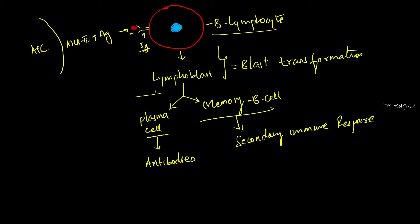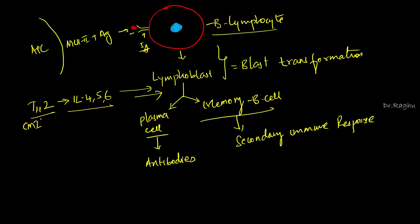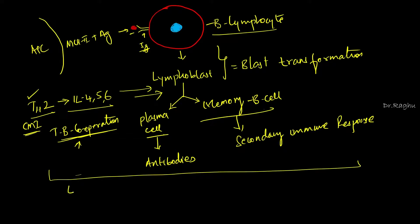One very important point: the conversion of the lymphoblast into plasma cells is aided by a cell from the cell mediated immunity called T helper cell 2. The T helper cell 2 secretes cytokines — interleukin-4, interleukin-5, and interleukin-6 — which stimulate the lymphoblast to get converted into plasma cells. This cooperation occurring between the T cell and the B cell is called T-B cooperation. This entire process is called lymphocyte activation and formation of antibodies.